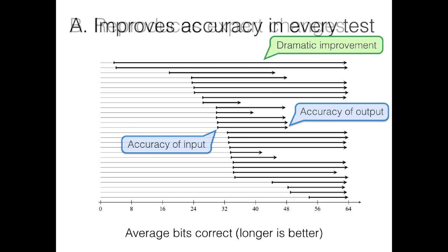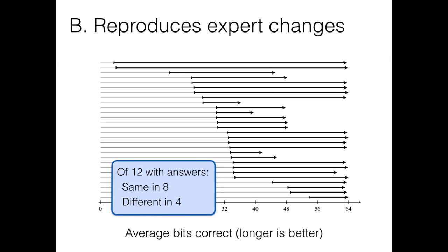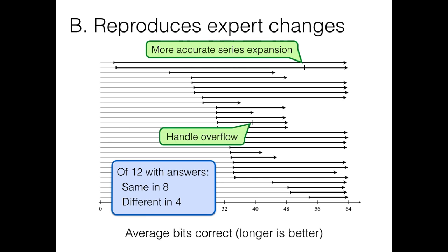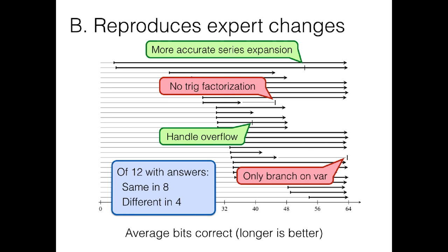We can also check the solutions that Herbie finds against those provided by experts, because in 12 of the cases, Hamming gave his own solution to the problem. In 8 of those 12 cases, Herbie and Hamming produce pretty much the same floating-point program. But 4 are different. We checked why they differ. In 2 of the cases, Herbie produced a more accurate series expansion, or handled overflow, where Hamming didn't, producing a more accurate program. In the other 2, Herbie fared worse, because it wasn't able to apply sophisticated numerical transformations, like trig factorization, or because it wasn't branching on complicated enough expressions.